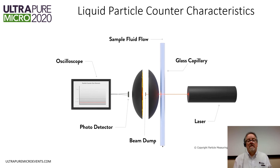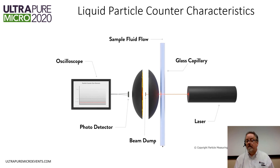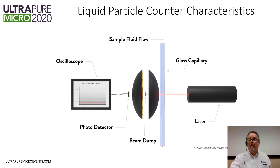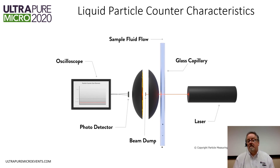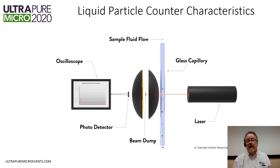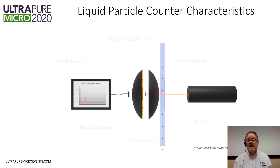This is a typical liquid particle counter. We have a light source — a laser — and a means of focusing the laser down to a flow capillary where the fluid that you want to measure is passing through. You have a means of collecting the scattered light that occurs when the particles pass through the laser beam, and you focus that light down onto a photodetector, which creates an electronic signal that you can measure.